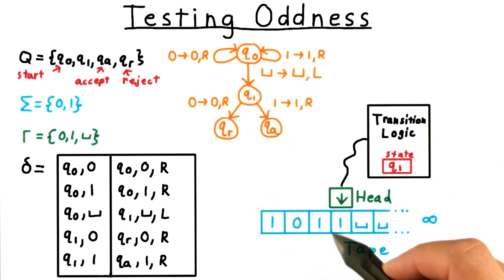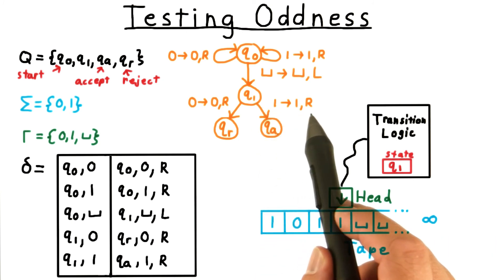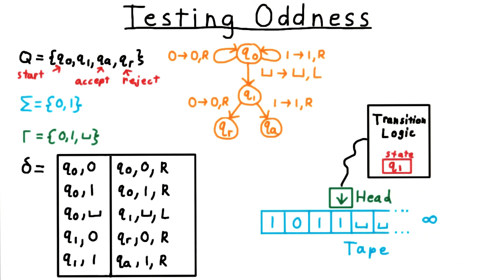Now, we read the symbol under the head. That's a 1, so we follow this transition rule here, and we end up in an accept state.